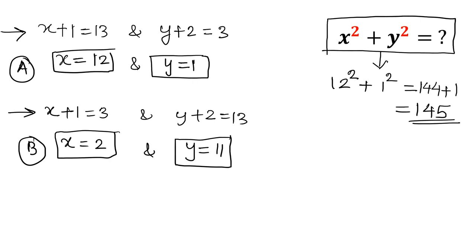Now for case B our answer will be 2 square plus 11 square. 2 square is 4, 11 square is 121. So our answer is 125.